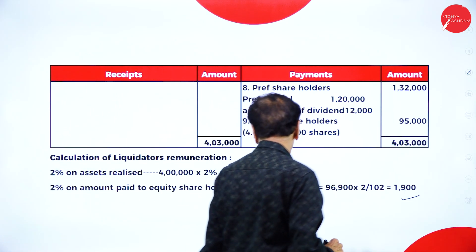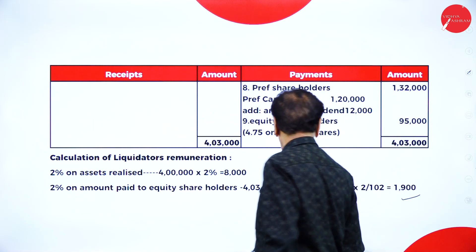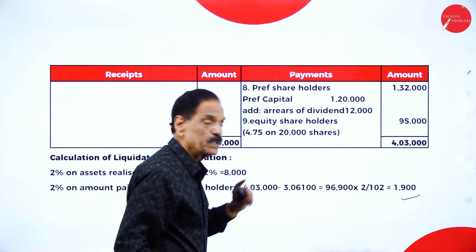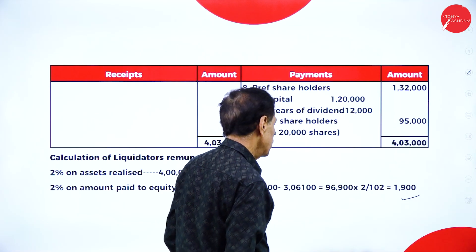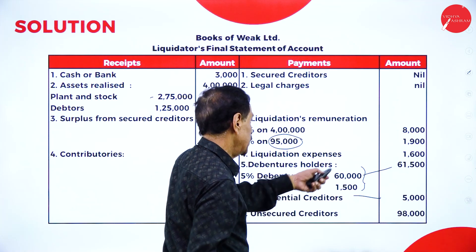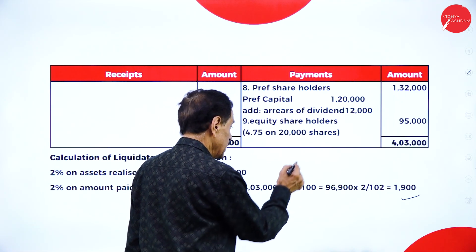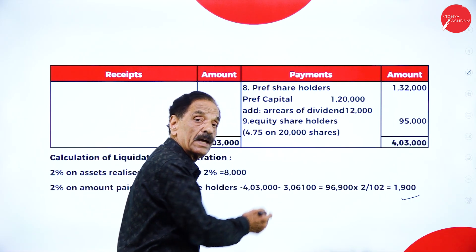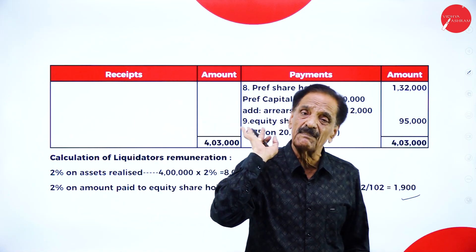To understand the liquidation remuneration calculation: 2% on total assets realized; then 2% on amount paid to equity shareholders — equity shareholders are last. Rs.4,03,000 total, minus all expenditures of Rs.3,06,100, leaves Rs.96,900. Using the formula 2 by (1+2), the remuneration is Rs.1,900. After paying Rs.1,900 remuneration, Rs.95,000 remains for equity shareholders — for 20,000 shares that is Rs.4.75 per share.